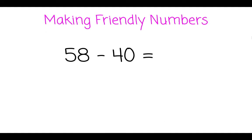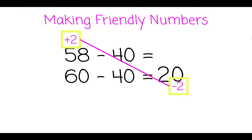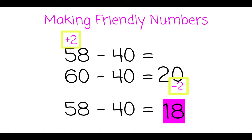Last example for today. 58. We can add 2 to it to make it 60. 60 take away 40 is 20. Take that 2 away that we added in the beginning. And 58 take away 40 is 18.